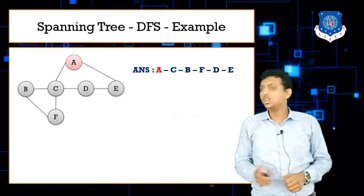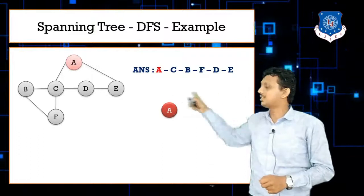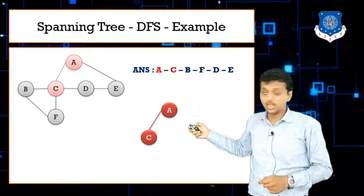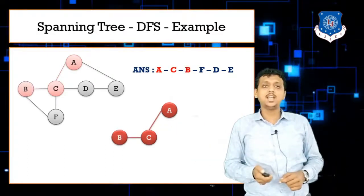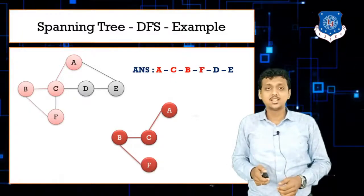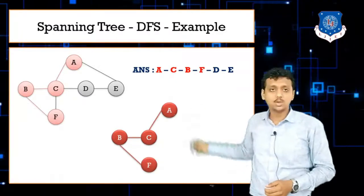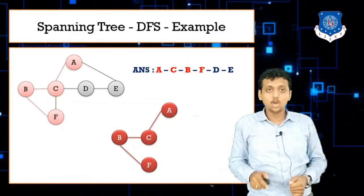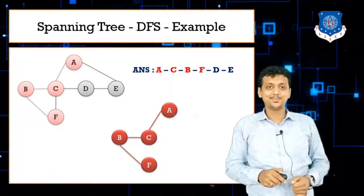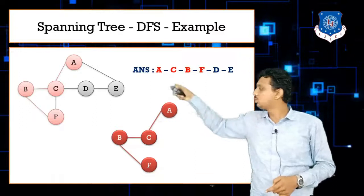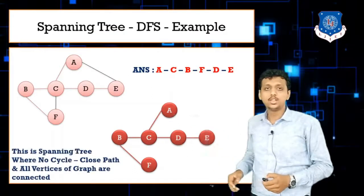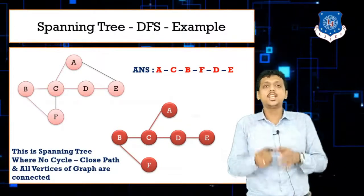To build the DFS spanning tree, just follow the answer sequence. Draw A, then A to C, then C to B, then B to F. At F, do not connect F back to C — that would create a closed path C-B-F-C, which is not a spanning tree. Instead, backtrack from F to B, B to C, then draw C to D, and D to E. This is the spanning tree from DFS.